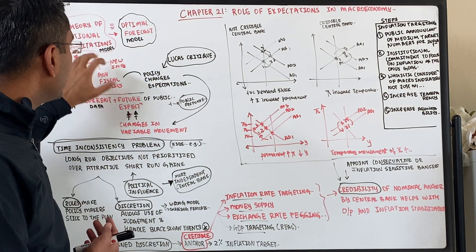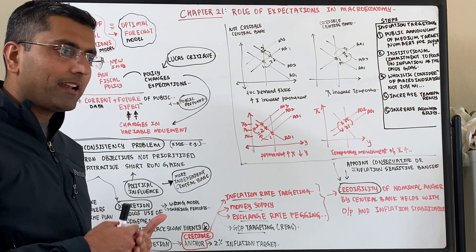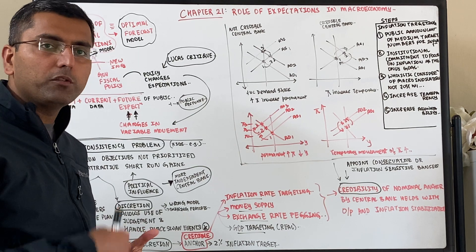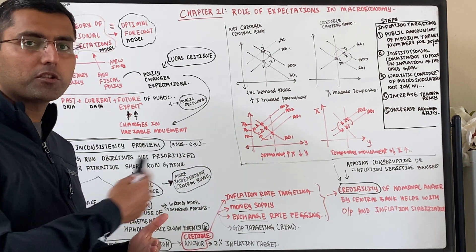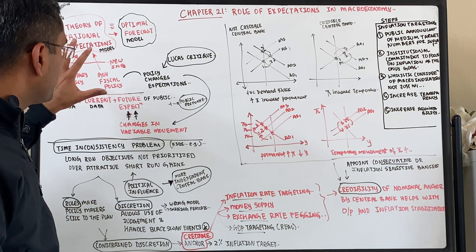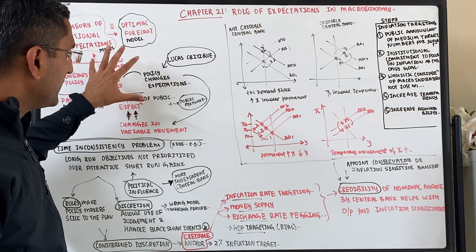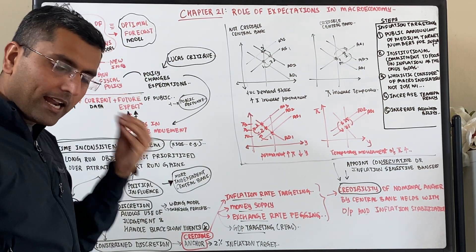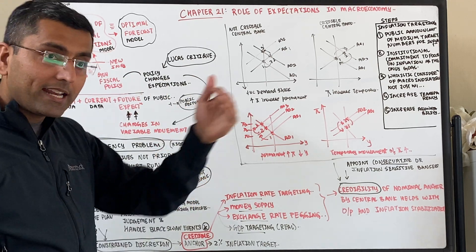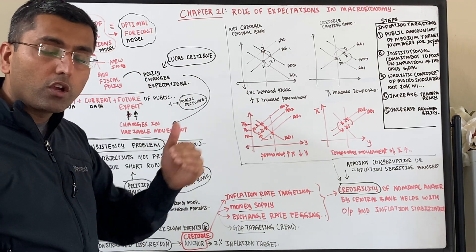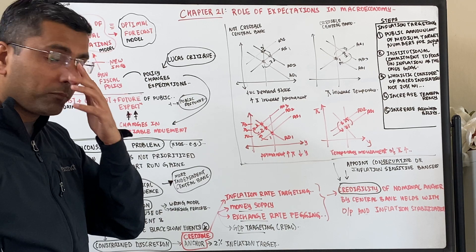The Lucas critique says that if you don't account for the structural changes in how the public is feeling, how they're incorporating policy changes, and how their responses are changing, then your model has a problem. But if we combine all of this — past data, current data, and structural behavioral changes — then we get a powerful model that can predict the future much more accurately, not 100%, but much more accurately. With the right model, the Federal Reserve can set the right expectations for inflation, unemployment targets, and other variables.